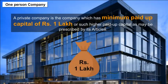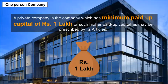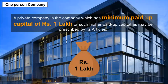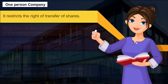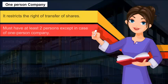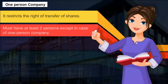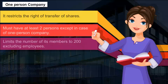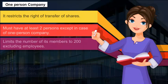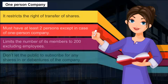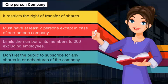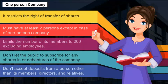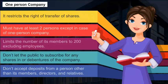Private Company: A private company has a minimum paid-up capital of 1 lakh rupees or such higher amount as prescribed by its articles. It restricts the right of transfer of shares, must have at least two persons (except in the case of a one person company), limits the number of members to 200 excluding employees, does not invite the public to subscribe for shares or debentures, and does not accept deposits from persons other than its members, directors and relatives.